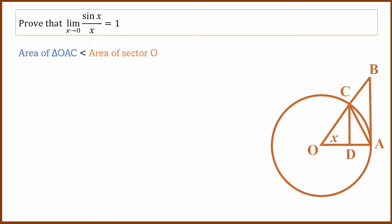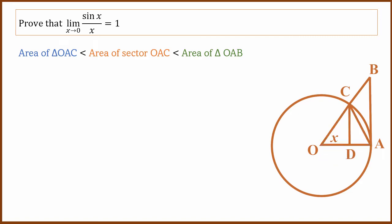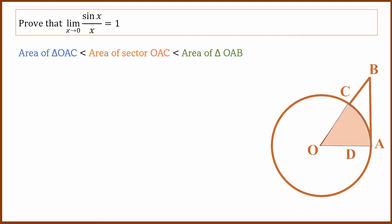We use an inequality to prove this. What is the area of triangle OAC? It is the blue triangle. Triangle OAC — this area is less than sector OAC. That is the sector. That is the triangle area, then sector area.